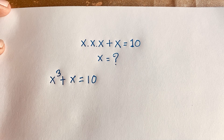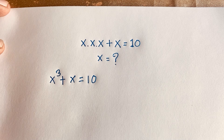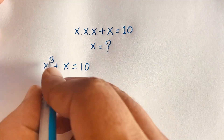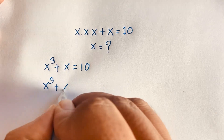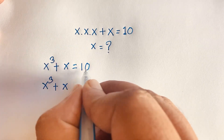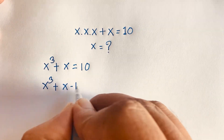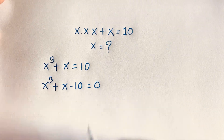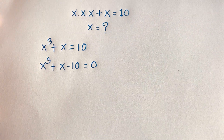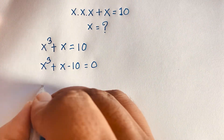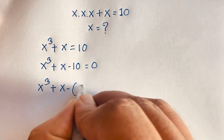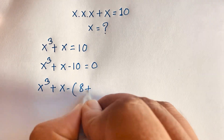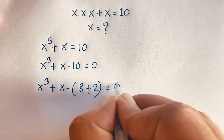First of all, I can see easily here is x to the power 3 plus x. If I move this 10 to this side, it will be negative 10, so x to the power 3 plus x minus 10 is equal to 0. Then I can say here is x to the power 3 plus x minus 10, which is 8 plus 2, is equal to 0.